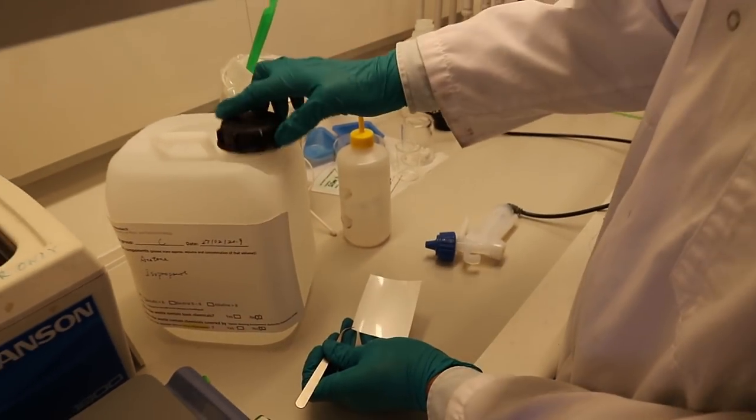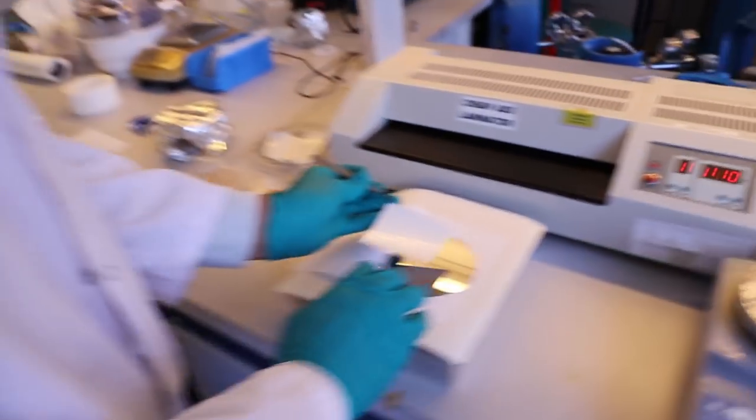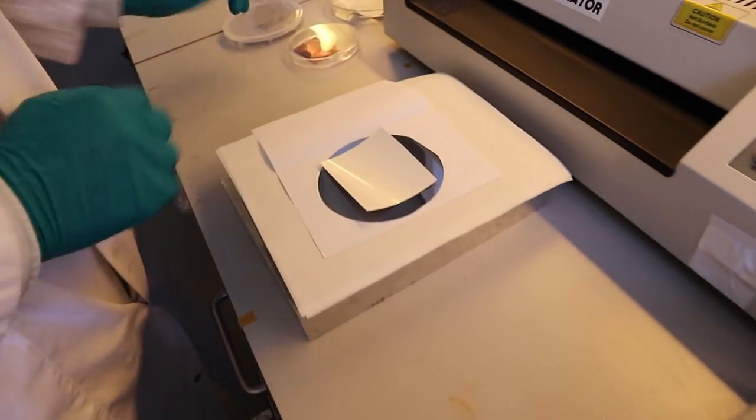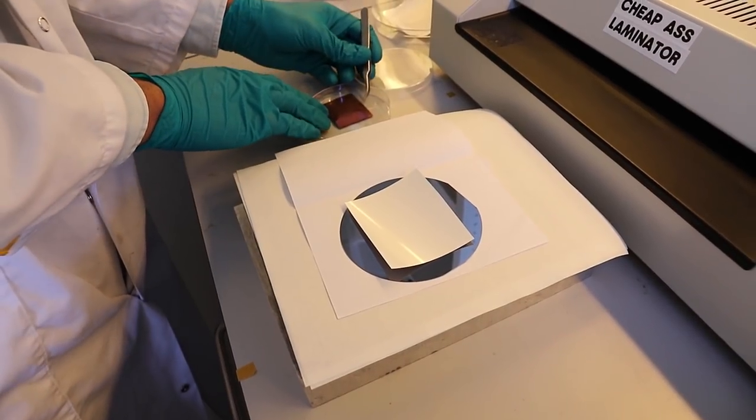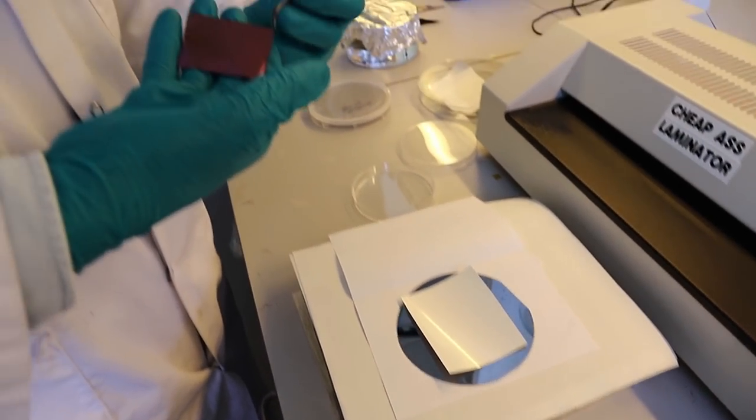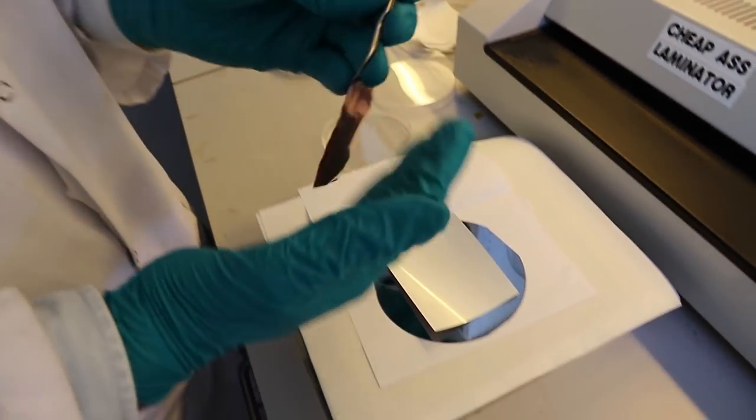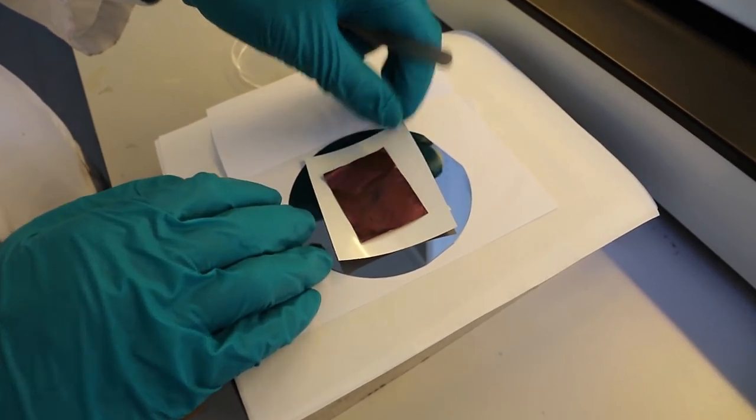Okay, it's completely dry now. We're now going to laminate the copper foil on top of this PVA foil. We place the copper foil facing down onto the PVA foil like this.